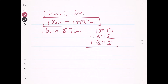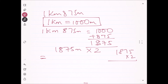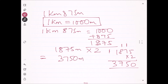She has covered 1875 meters into 2 in one day. So how much is it? We calculate 1875 into 2: 2 fives are 10, carry 1; 2 sevens are 14 plus 1 is 15, carry 1; 2 eights are 16 plus 1 is 17, carry 1; 2 ones are 2 plus 1 is 3. So she has covered 3750 meters distance in one day.